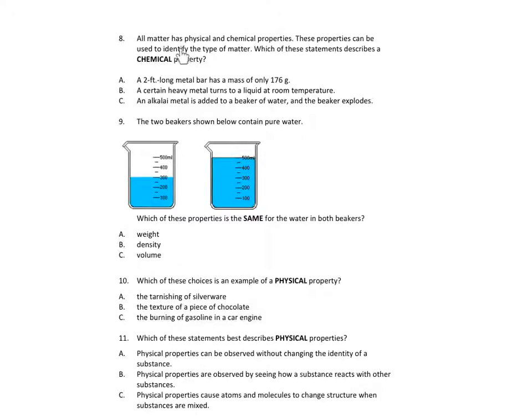Number 8. All matter has physical and chemical properties. These properties can be used to identify the type of matter. Which of these statements describes a chemical property? A. A 2 foot long metal bar has a mass of only 176 grams. B. A certain heavy metal turns to a liquid at room temperature. C. An alkali metal is added to a beaker of water and the beaker explodes.